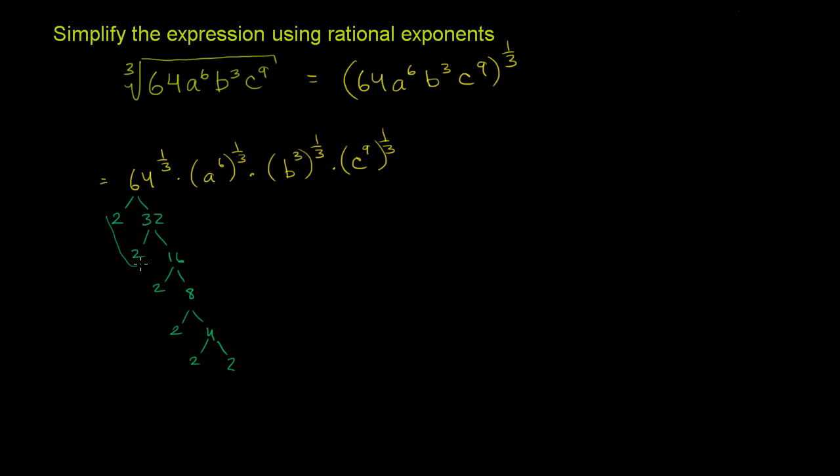Or you could have 4 times 4 times 4. So if it immediately didn't jump in your head that 64 is 4 to the third power, you can literally do a brute force prime factorization here and see that you have, you can factor this into 2 to the sixth power or the same thing as 4 to the third power. So I'll let you think about that a little bit.